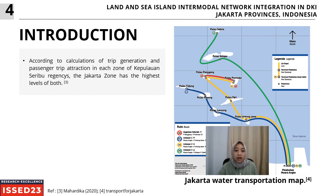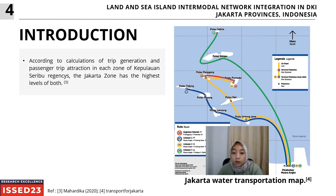For this research, the aim is to analyze the integration between land and sea in Kepulauan Seribu Regency. In Jakarta, Indonesia, we have land and sea modes because Jakarta has an island area, Kepulauan Seribu Regency, which is divided into several islands. As you can see on the map here, there is Sebirah Island, Kelapa Island, Pramuka Island, Panggang Island, Pari Island, Untung Jawa Island, and others. All of those islands are connected to Muara Angke Port. According to calculation of trip generation and passenger trip attraction in each zone of Kepulauan Seribu Regency, the Jakarta zone has the highest level, so they should have good integration to provide for the high level of trip generation.